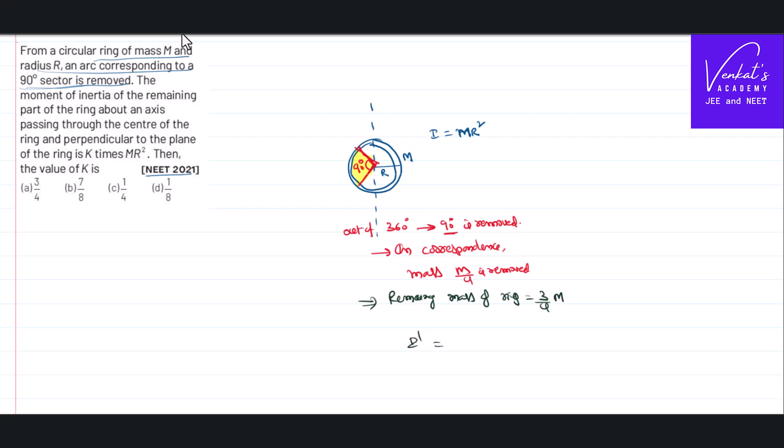New moment of inertia will be in the place of M, I would write only 3 by 4 of M. Because all that are intact, the radius also not changed. So this is 3 by 4 of MR square.